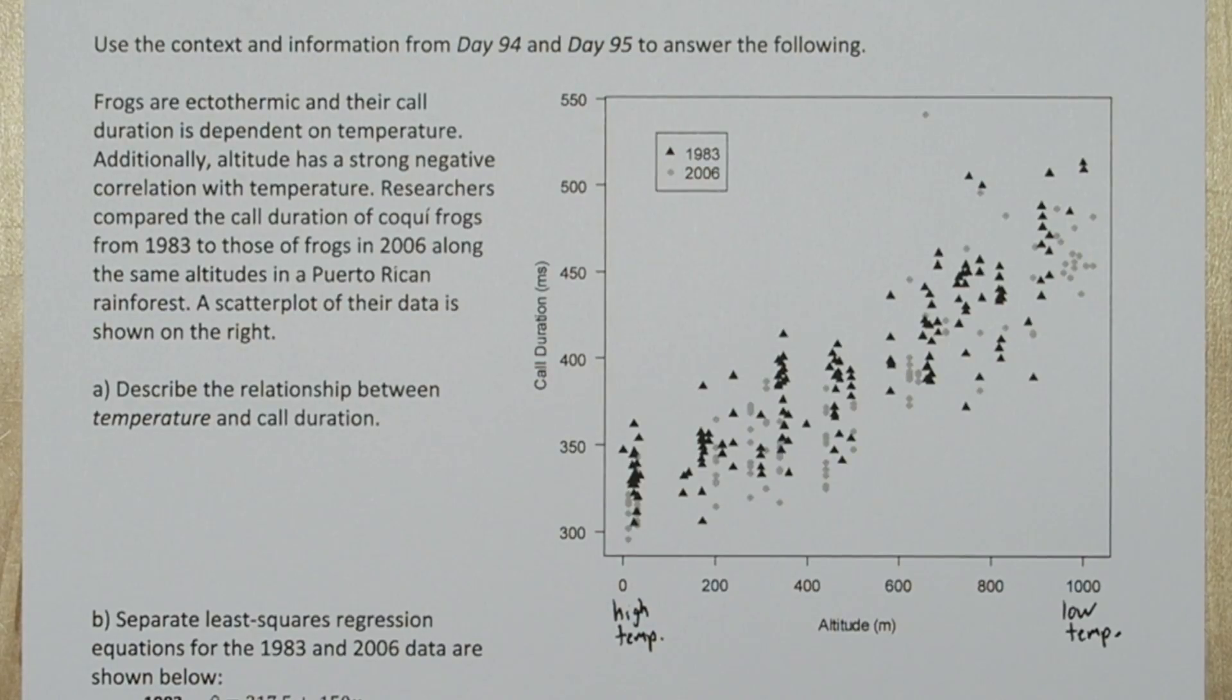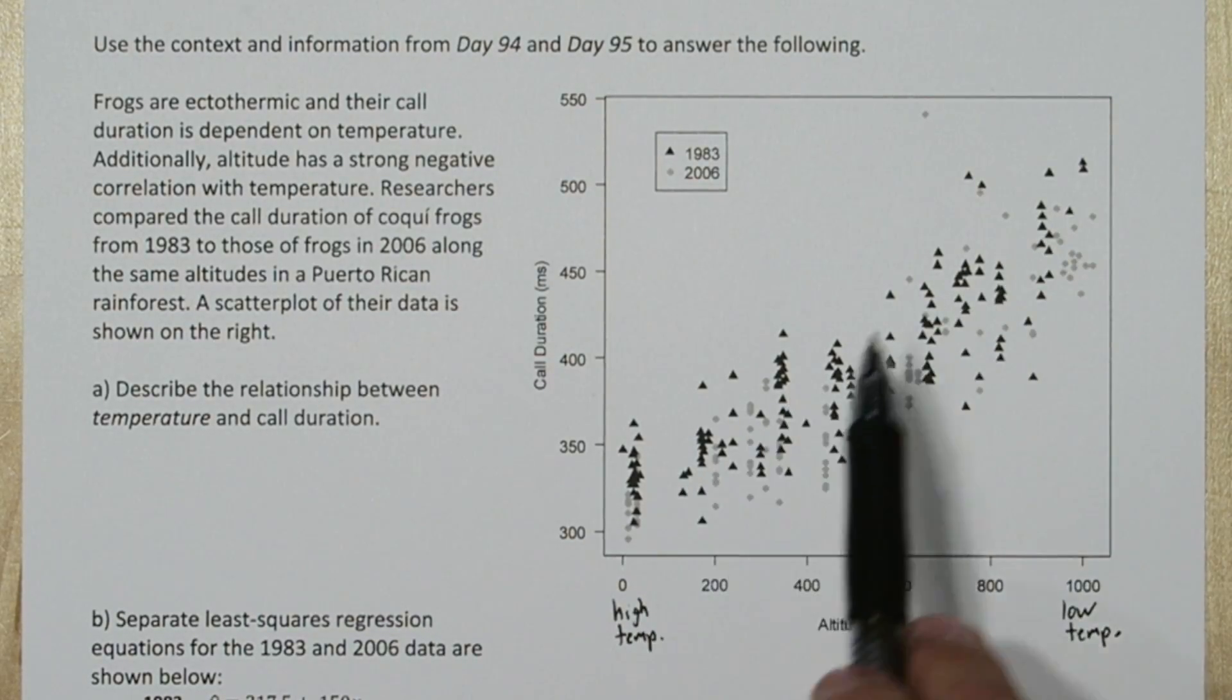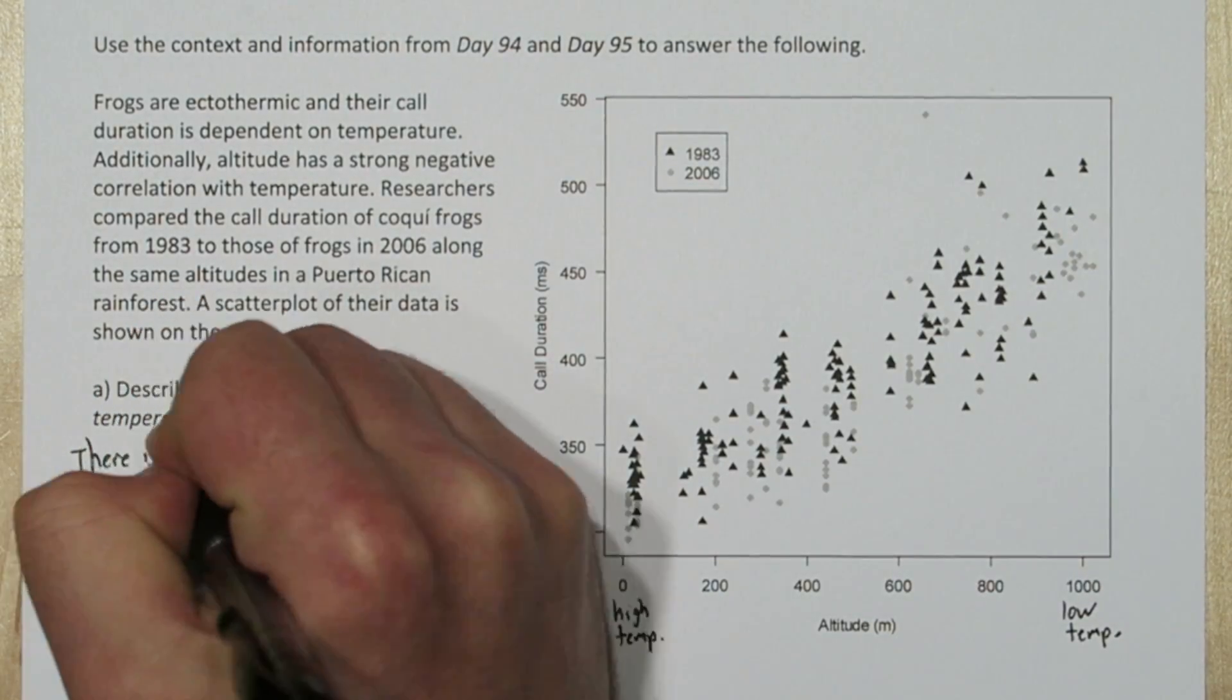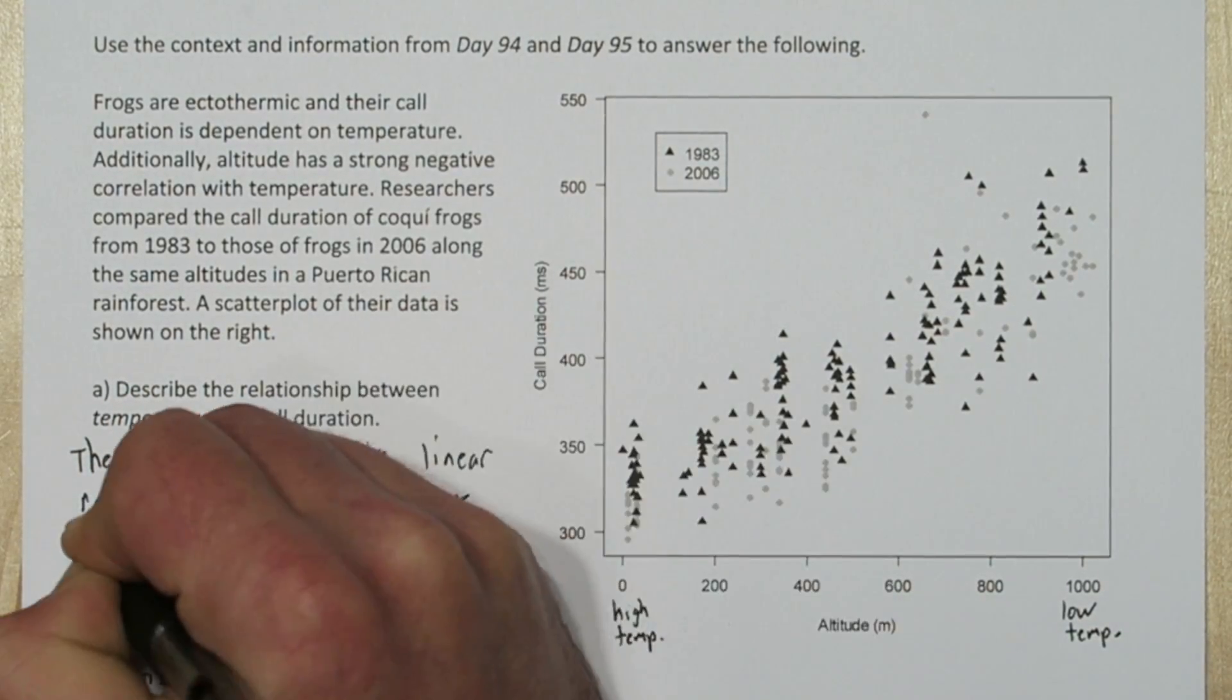So when this says describe the relationship between temperature and call duration, it looks like as call duration goes up, temperature decreases. So we'll say there's a strong negative linear relationship between temperature and call duration.